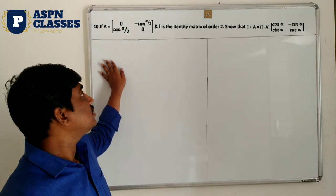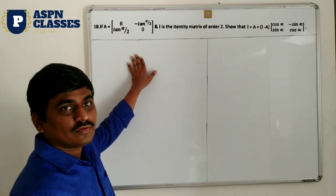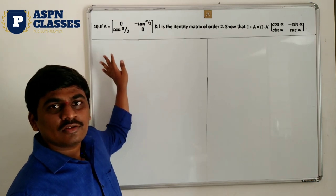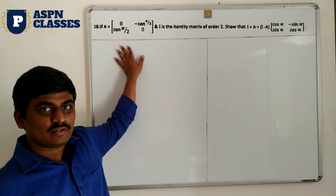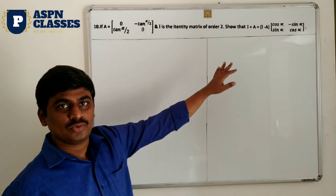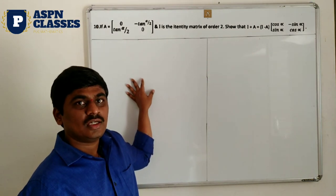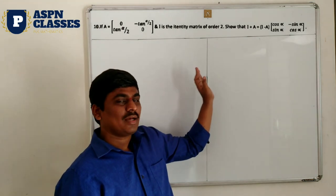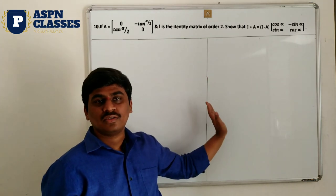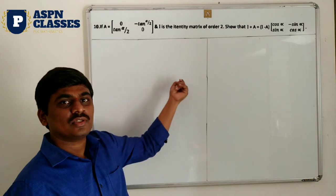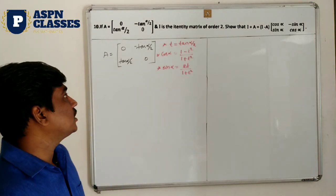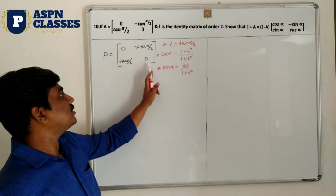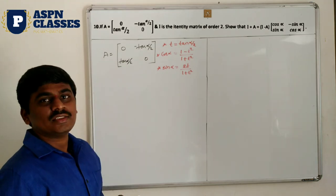Next question — also a 5-mark important question, a little bit difficult so carefully observe. If matrix A is given and I is the identity matrix of order 2, you have to prove: (I + A) = (I - A) × [cos α, -sin α; sin α, cos α].